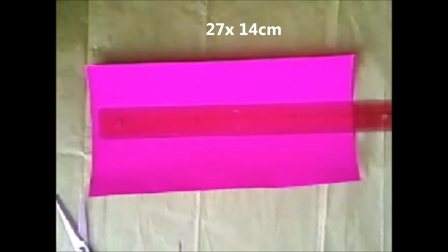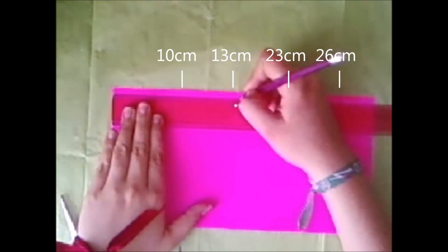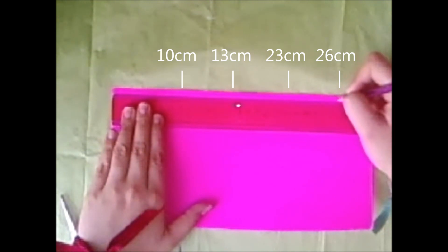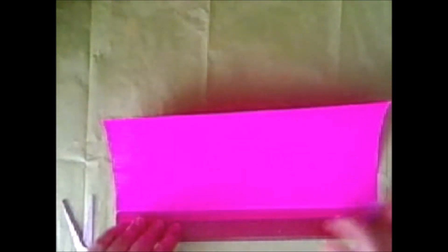Hola, lo primero que vas a hacer es un rectángulo de 27 x 14 cm. Ahora en él haremos marcas a los 10, 13, 23 y 26 cm, tanto arriba como abajo, y vamos a trazar con una línea.